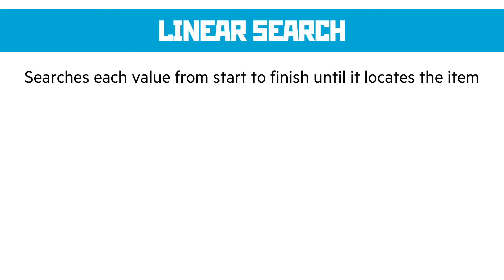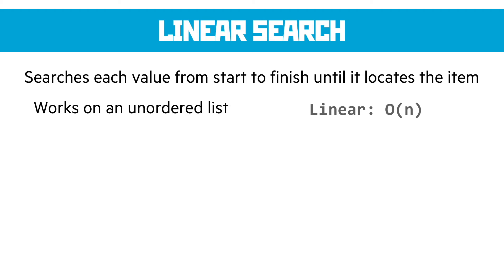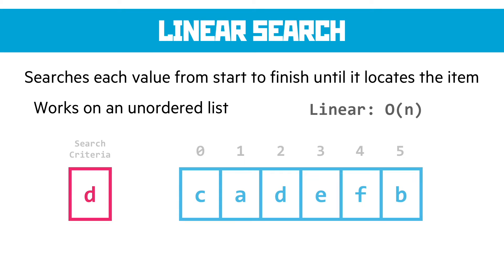With a linear search, we go through each value from start to finish until it locates the item. The complexity is linear — it increases in both space and time complexity as the data set grows. For instance, if we're looking for element D, we start at index 0, it's not there, move to 1, not there, move to 2 — found it, return index 2. In the worst case, if D wasn't in the array, we'd have to compare every single index until we were 100% sure it wasn't there. That's not the most efficient approach.